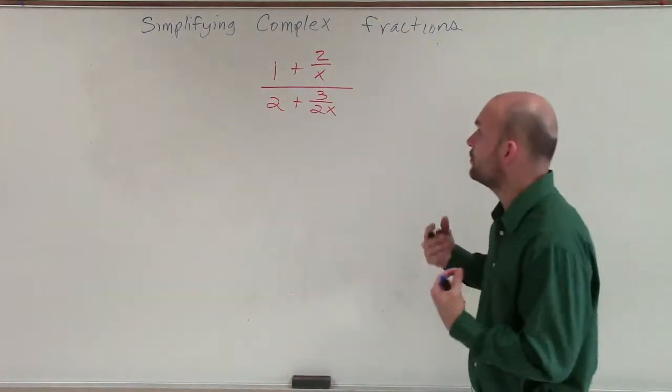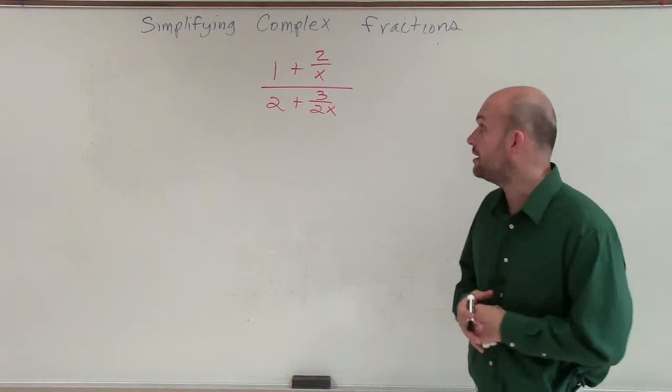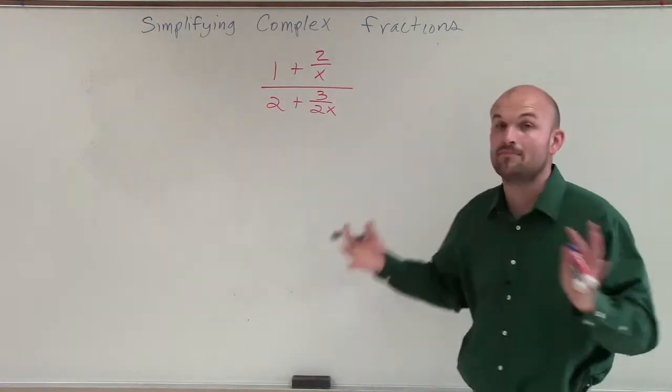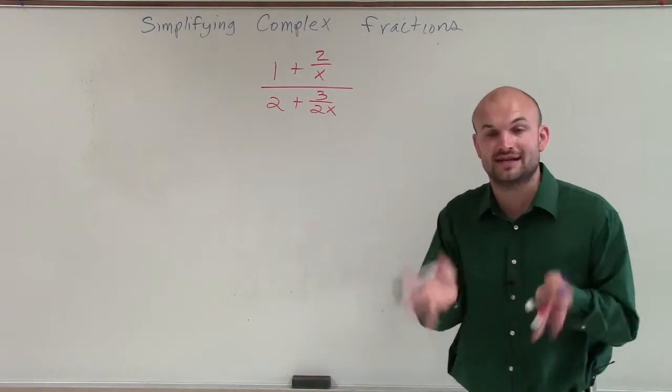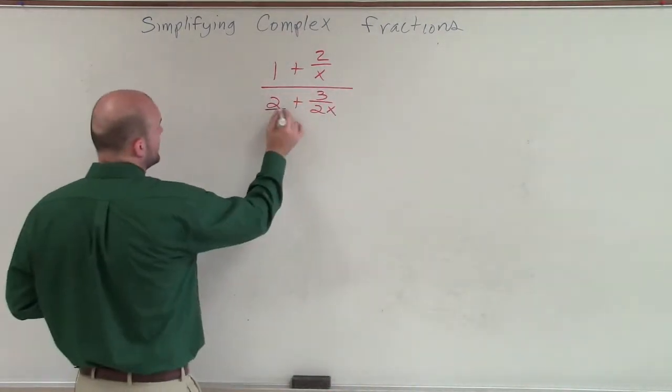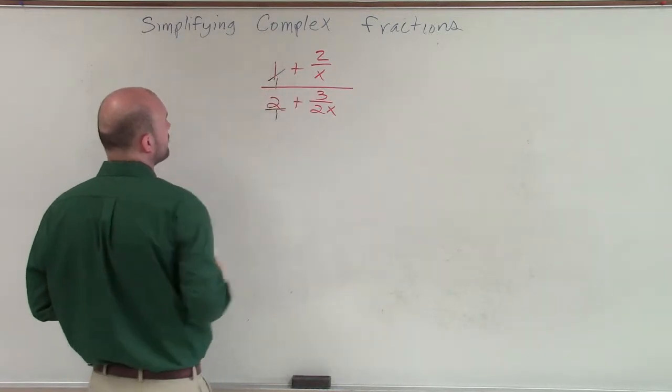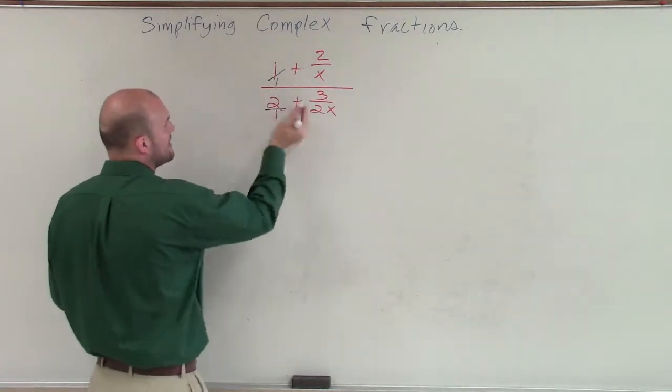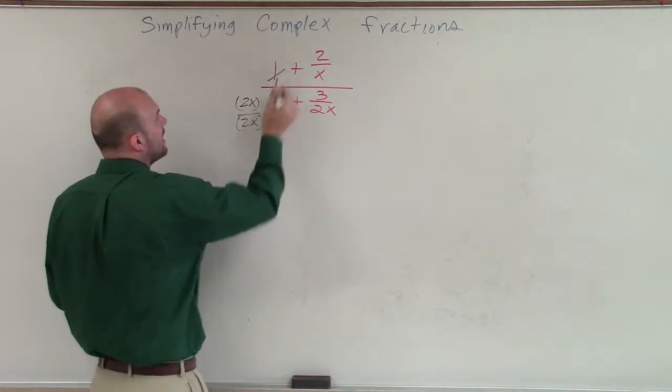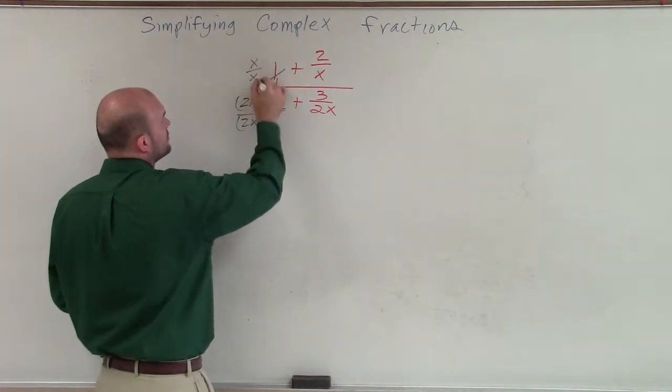However, in this case, I just want to go ahead and practice going through what we'd have to do if we didn't want to do it that way, and we wanted to combine our numerator and our denominator to get them to be one single fraction. So over here, I have 2 over 1. Over here, I have 1 over 1. So if I want to combine these, that means I need to multiply this by 2x over 2x. And this term, I need to multiply by x over x.